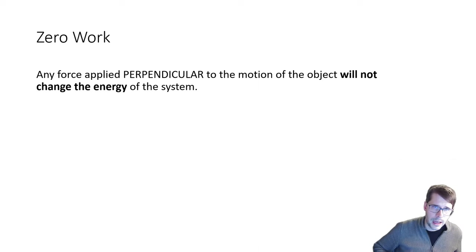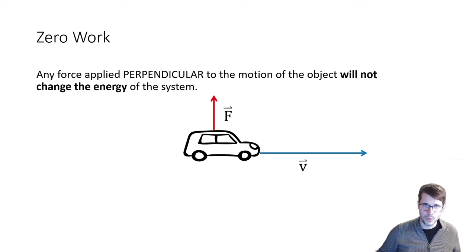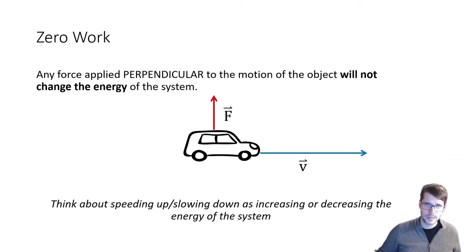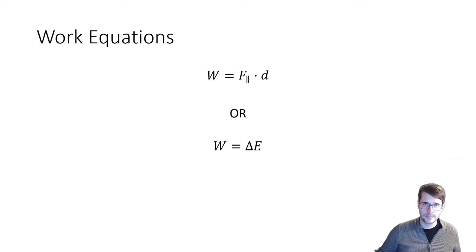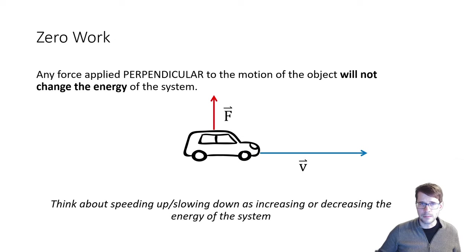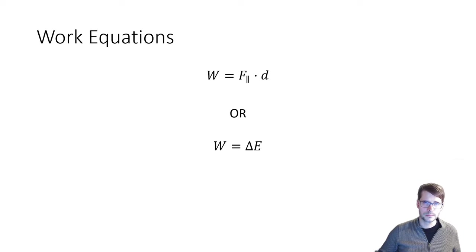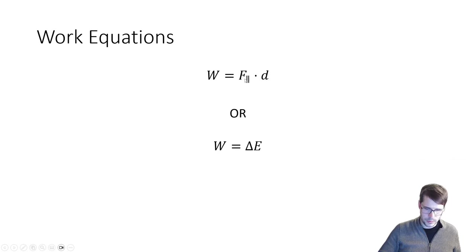Any force that's perpendicular does not change the energy of the system, so that's considered to be zero work — if the force is perpendicular to the motion. A force like that wouldn't speed up or slow down the object, so that's why it's zero work. These are the equations we've seen before: work is equal to the force parallel to the displacement times the distance or displacement. Remember as well that work is equal to the change in energy.